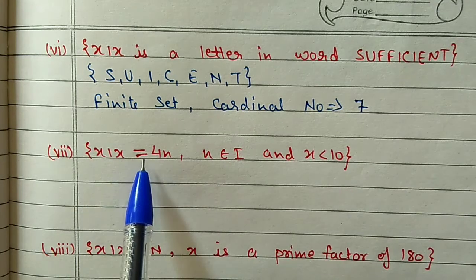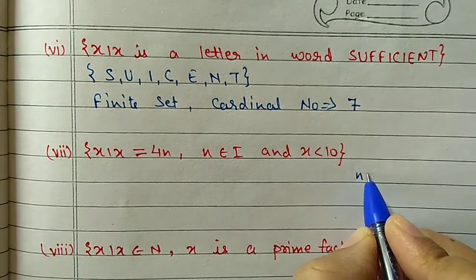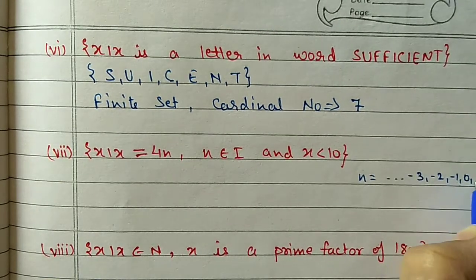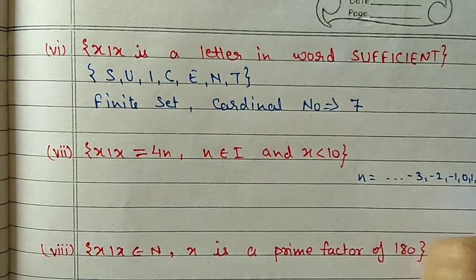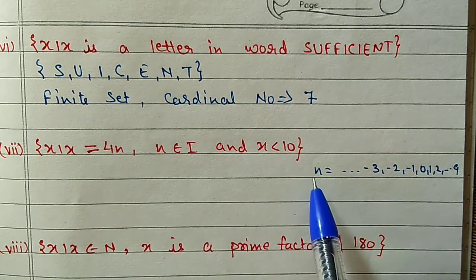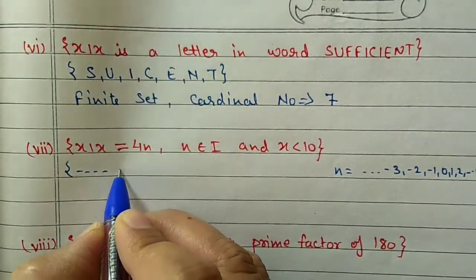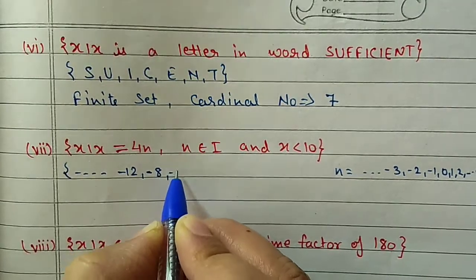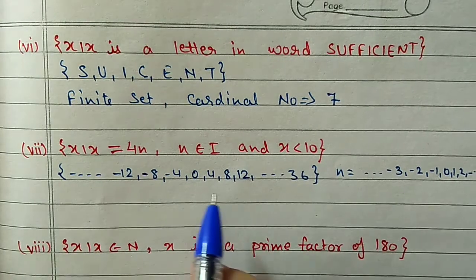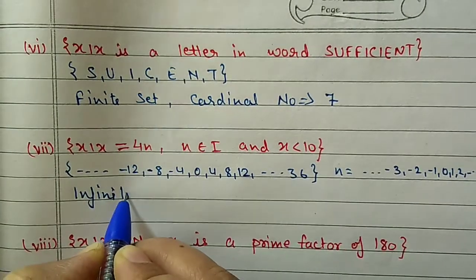Part (vii): {x such that x = 4n, n is an integer and n < 10}. Since n is an integer, we take negative numbers too: ..., -3, -2, -1, 0, 1, 2, up to 9. On the left side it goes up to negative infinity, but on the right the limit is 9. So the multiples of 4 include ..., -12, -8, -4, 0, 4, 8, 12, ..., 36. In the negative direction it goes to infinity, so we cannot count all elements. This is an infinite set.